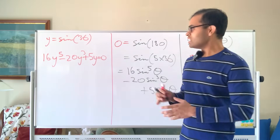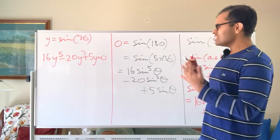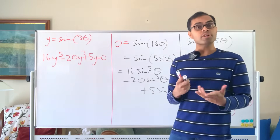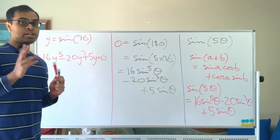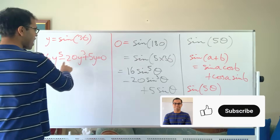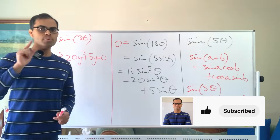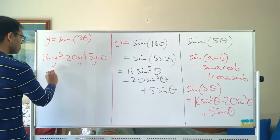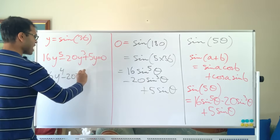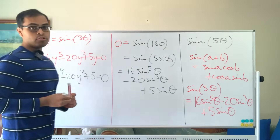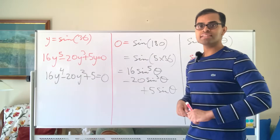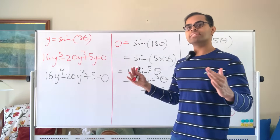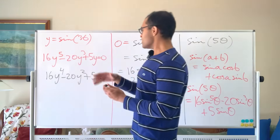We've reduced finding sine of 36 to solving that equation for y. It's a fifth degree equation, which looks bad, but it's special — there's no constant term, so y factors out. We can cancel y from both sides because sine of 36 is not 0 — from the unit circle, 36 degrees is not on the x-axis. So we get: 16y⁴ − 20y² + 5 = 0.